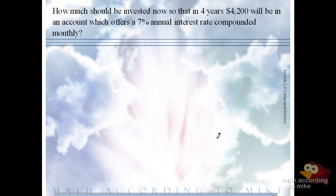How much should you put away so that in four years you have $4,200 in an account that has a 7% annual interest rate compounded monthly?